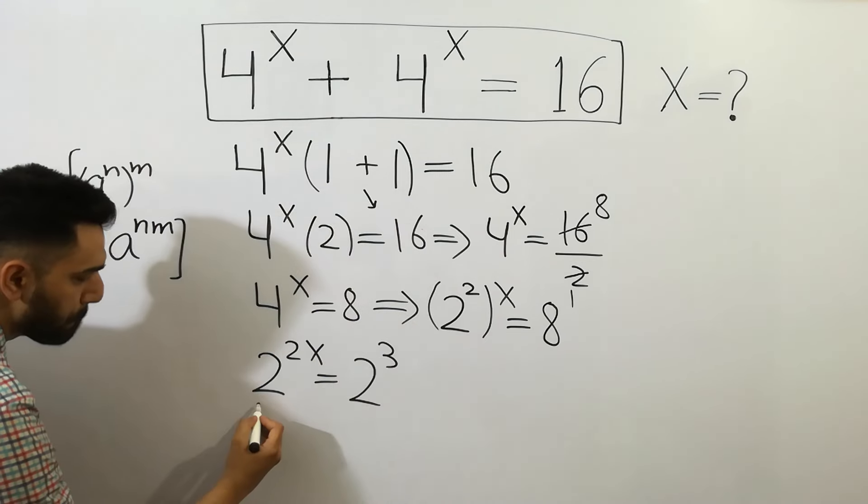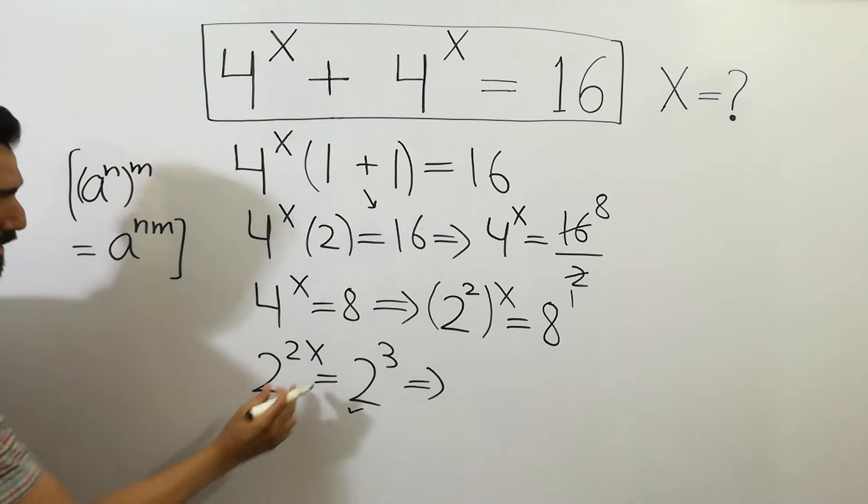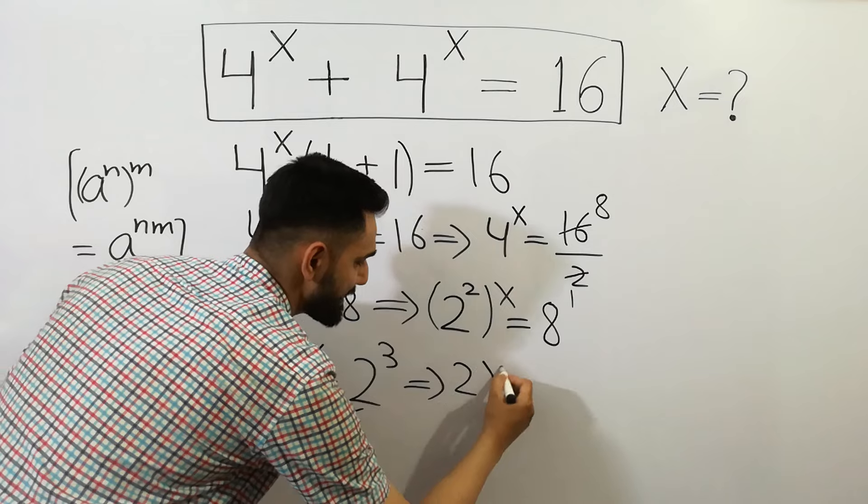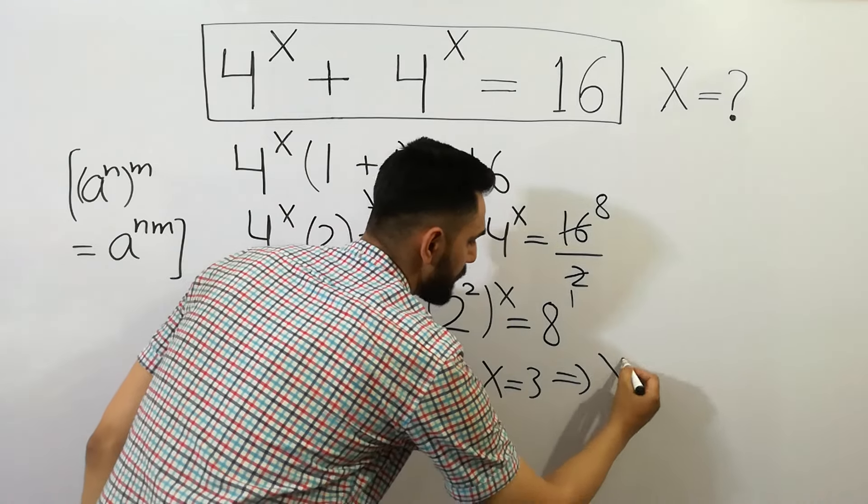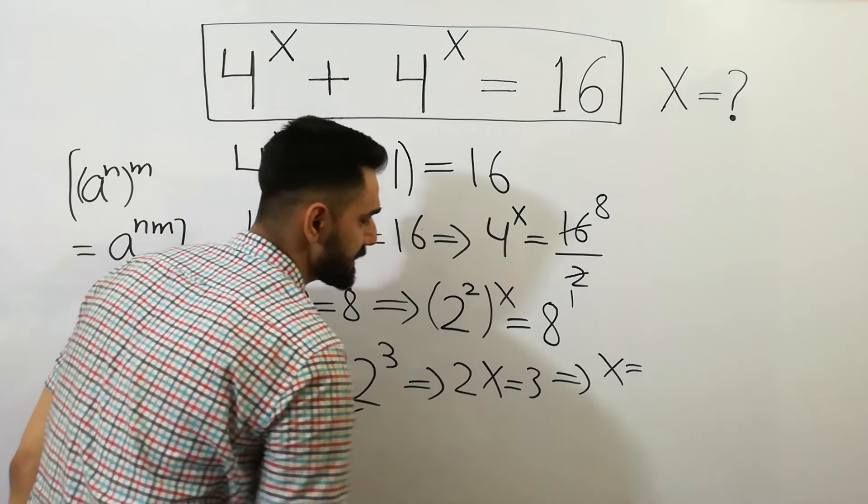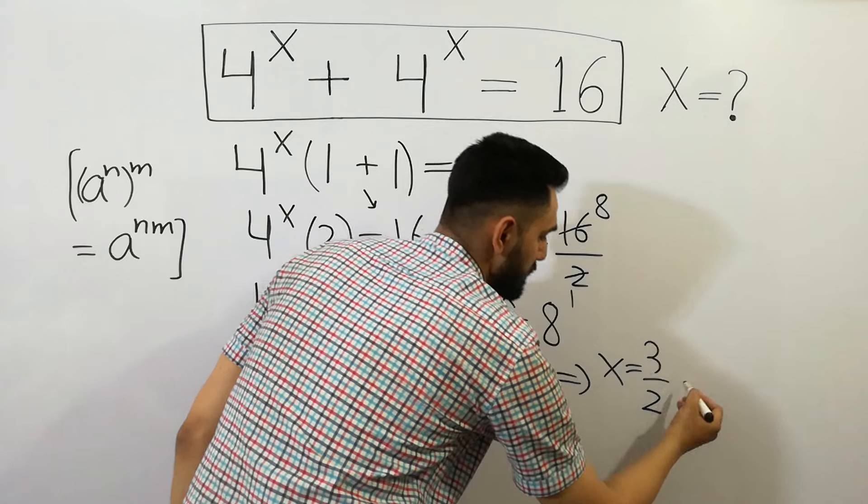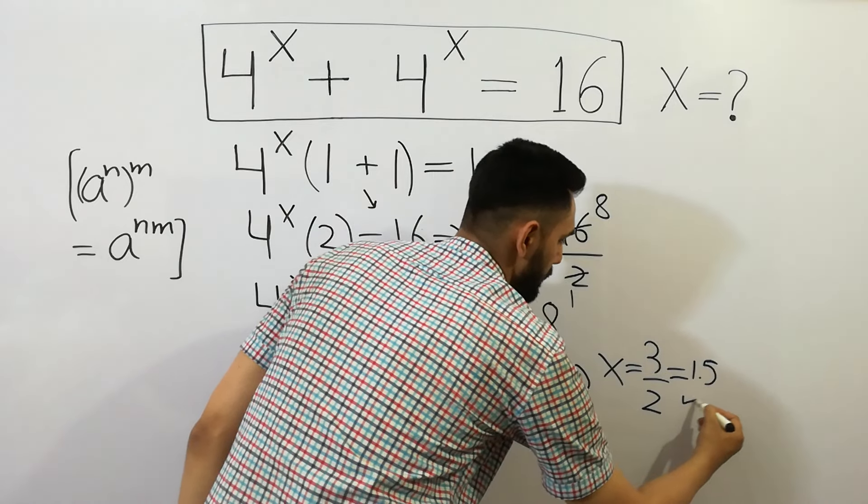Since 8 equals 2 to the power 3, we get 2x equals 3. And the value of x is 3 divided by 2, which can also be written as 1.5. So that's our answer.